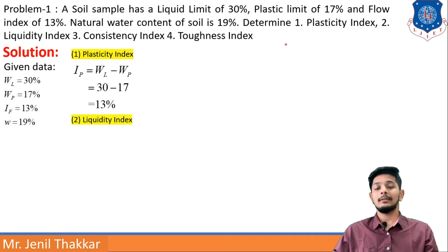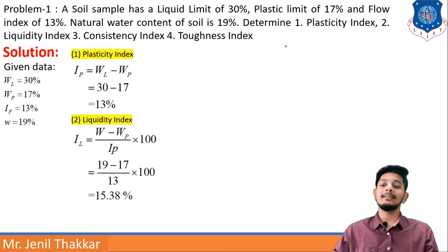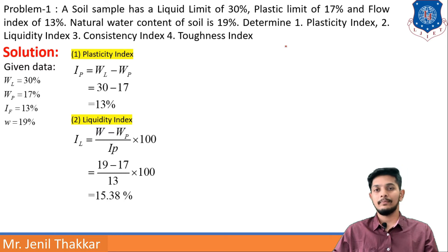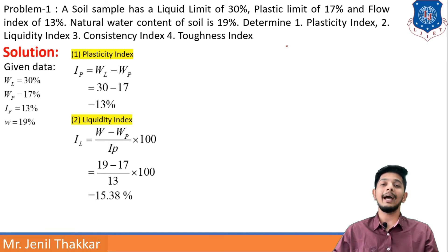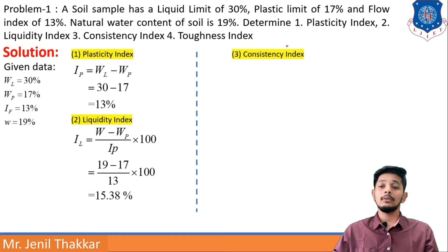Second item: liquidity index. IL = (W − WP) / IP × 100. Substituting the values of W = 19%, WP = 17%, and IP = 13%, we get IL = 15.38%.